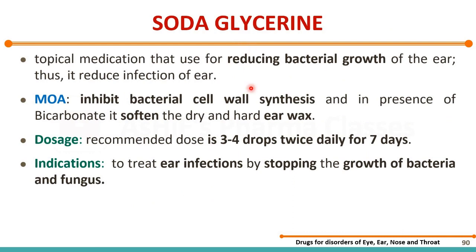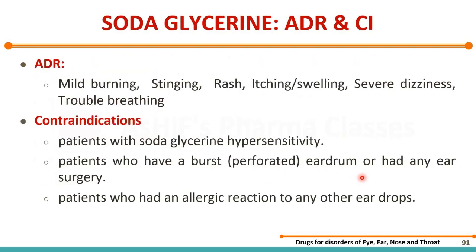Soda glycerin is used to reduce growth and infections in the ear. The mechanism of action: glycerin inhibits bacteria by drawing out moisture through osmosis, making the environment unfavorable for bacterial growth. Normally, we use 3 to 4 drops twice daily for 7 days. The dosage form is ear drops, and it works by stopping the growth of bacteria and fungus.